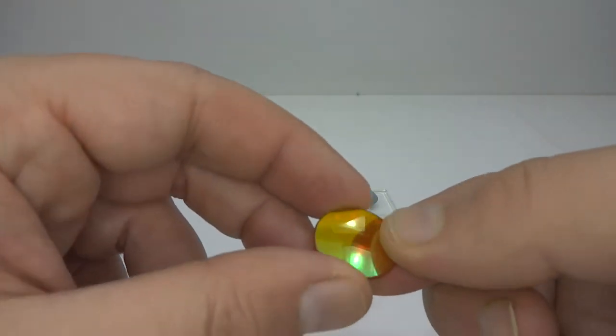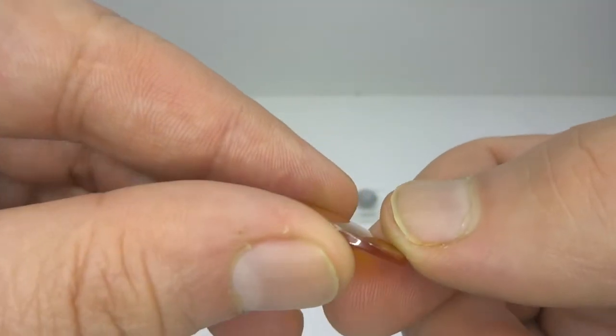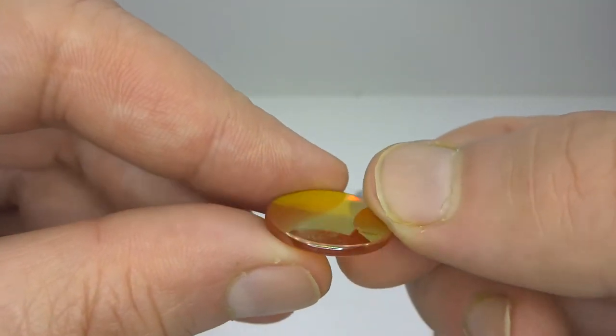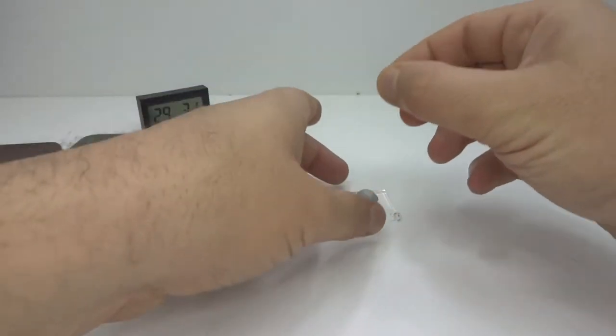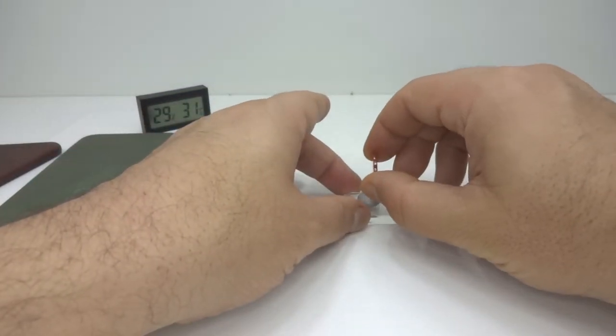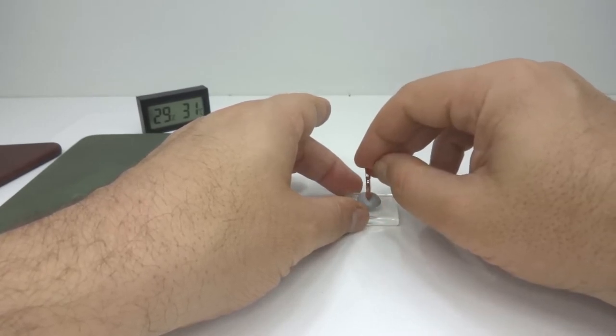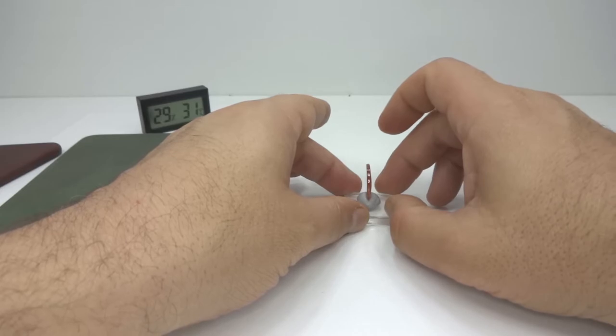I have here a zinc selenide carbon dioxide laser cutting lens. This is one of very few materials that can focus long wave infrared. Some others are zinc sulfide, germanium and table salt, but not glass.